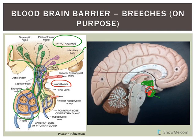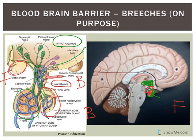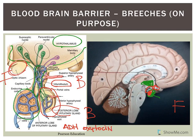Another place without an intact blood-brain barrier is the posterior pituitary. Capillaries there release hormones into circulation. ADH and oxytocin are actually made in the hypothalamus but transported via retrograde axonal transport to the posterior pituitary, where they are released from synaptic knobs into the bloodstream.